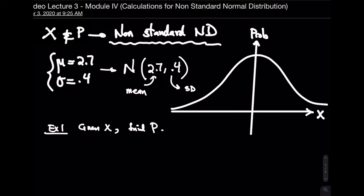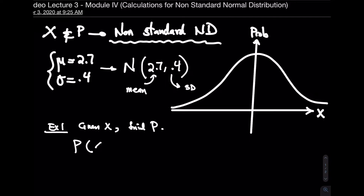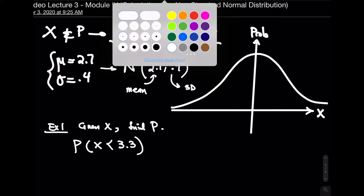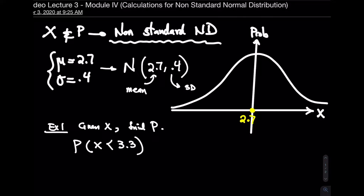The first case: find the probability that someone's GPA is less than 3.3, given the average GPA is 2.7. On the distribution, the middle value is 2.7, not zero. In a standard normal distribution the center is always zero, but here it varies. For IQs, the mean would be 100; for weekly study hours, maybe 7. In this experiment, the average is 2.7.